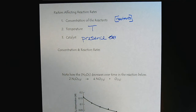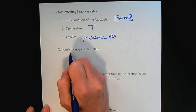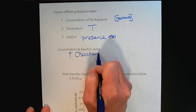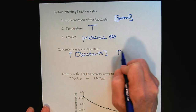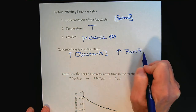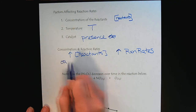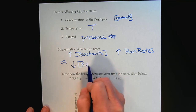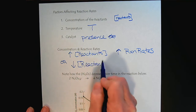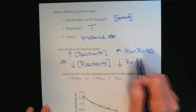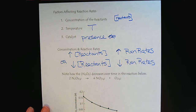Starting with concentration: as we increase the concentration of the reactants, we're going to increase the reaction rates. This is linked back to collision theory — the more reactants, the more likely they are to collide. It's a probability thing. If reactants are lost or the amount of reactants is decreased, that's going to slow down the reaction rate.